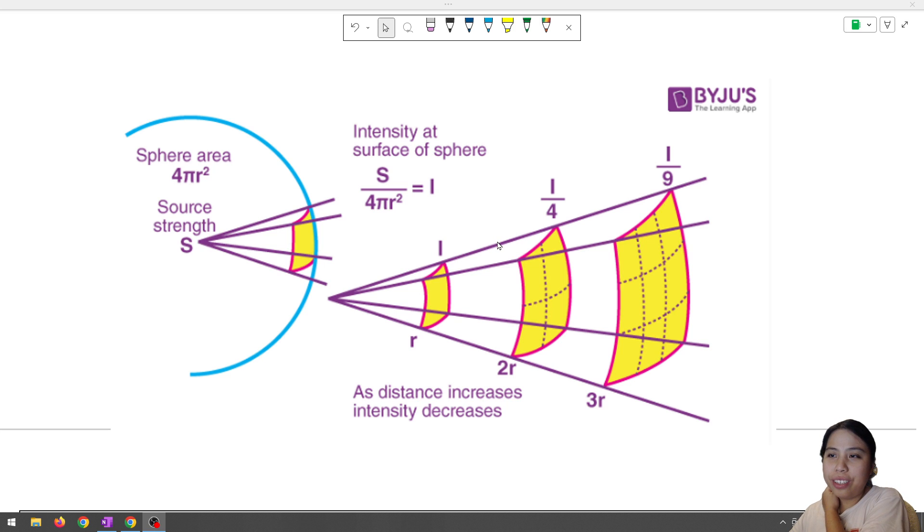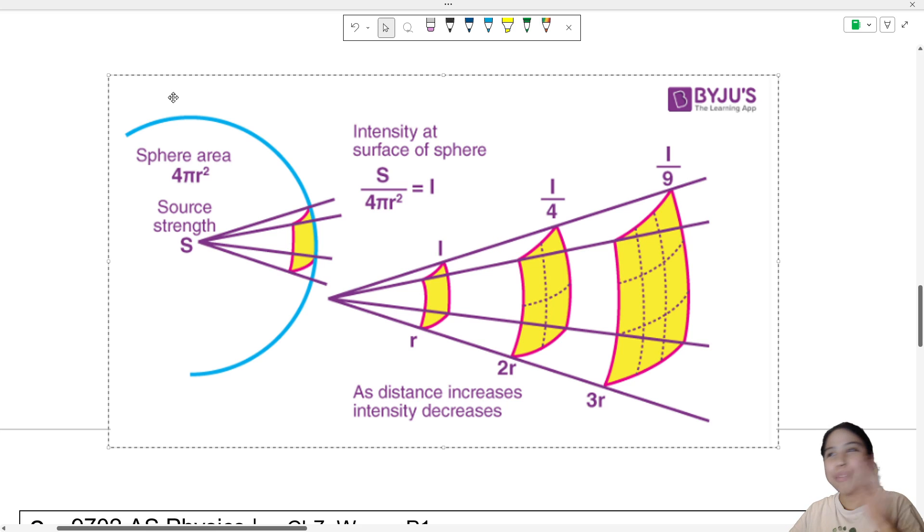Now as we can see here, this nice diagram thanks to Byju's learning app, you can have this source here where a sphere area is spreading out like the animation we saw just now. And if we take a slice of that sphere, we'll see these highlighted parts, that as the further you go from the sphere, the more spread out this tiny little square is on the sphere.